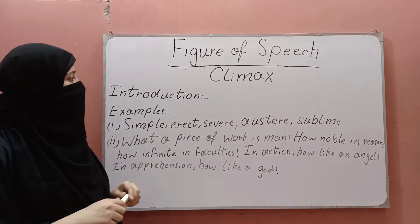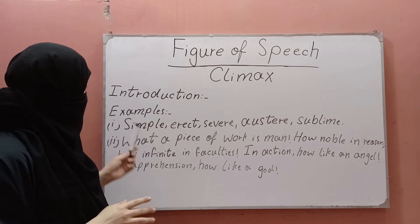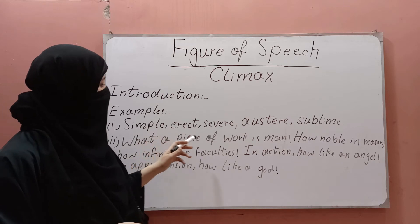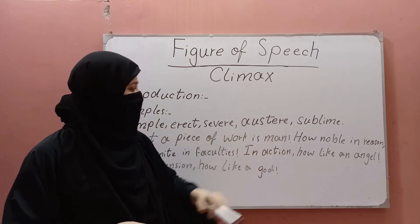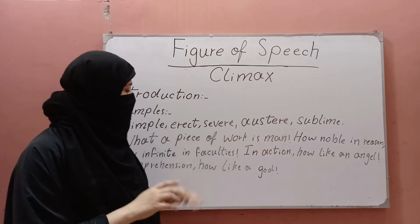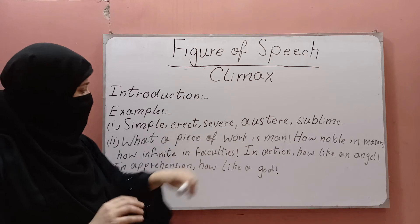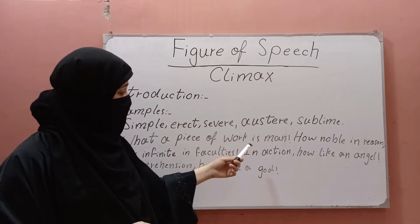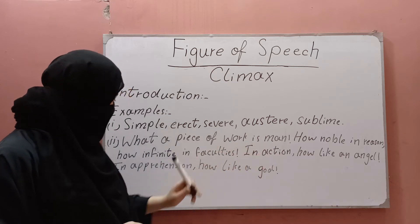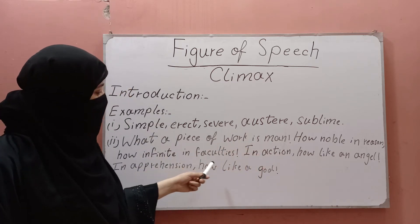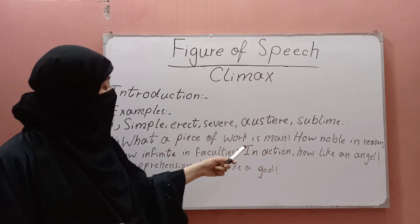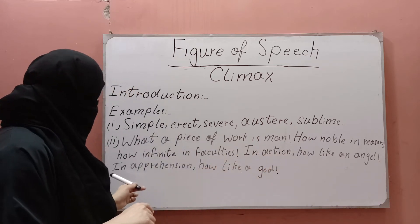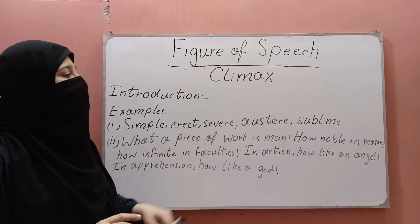Now I will tell you examples of climax to make the point clear. First: simple, erect, severe, austere, sublime — this is the arrangement of a series of ideas in increasing order. The other example is: 'What a piece of work is man! How noble in reason, how infinite in faculties, in action how like an angel, in apprehension how like a god.'